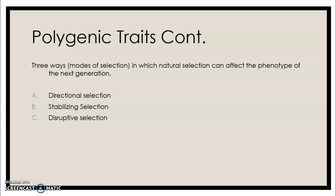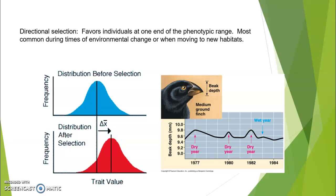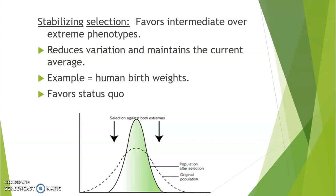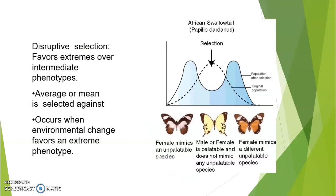The three modes are directional selection, stabilizing selection, and disruptive selection. Directional selection favors individuals at one end of the phenotypic range and is most common during environmental change — for example, after a drought made seeds very hard, only birds with large strong beaks survived, shifting the average beak size larger. Stabilizing selection favors individuals in the middle and selects against the extremes — human birth weights are an example, as being too heavy or too light is not good. Disruptive selection, seen with the peppered moths, selects against individuals in the middle and favors those on the extremes, potentially leading to a completely new species.